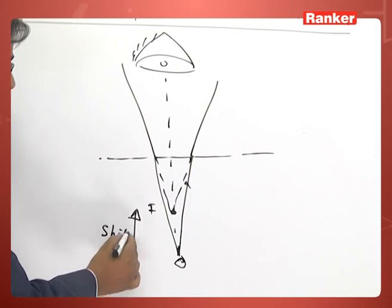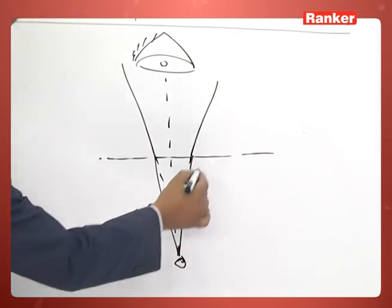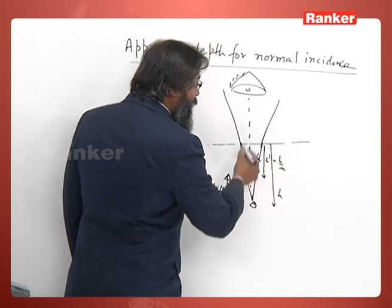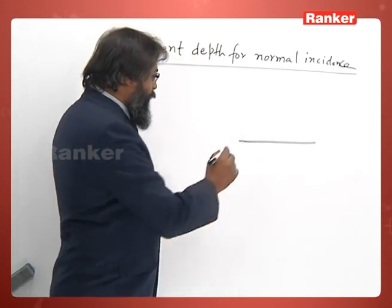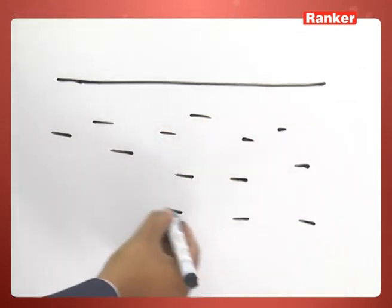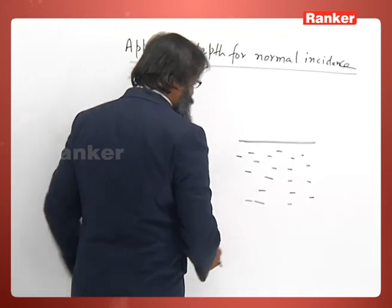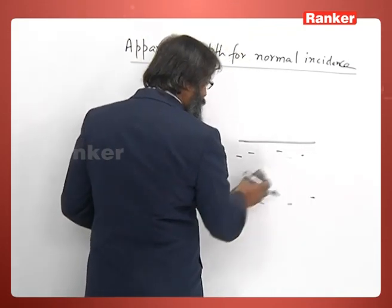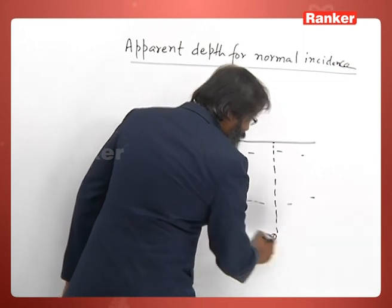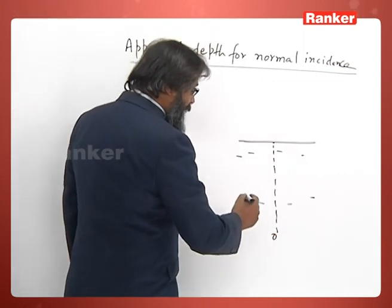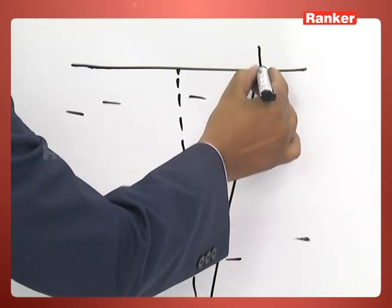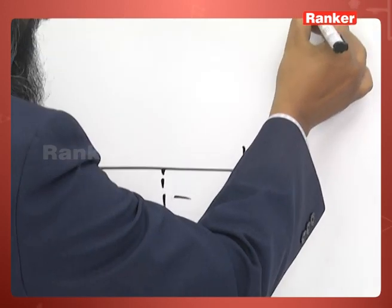Now we are going to calculate how much this shift is and where the new location of the image I is. If the actual depth is h, we will find that h' = h/μ. Suppose this is the surface separating two media — let's say water — and we have an object O at depth h. Let us consider a paraxial ray, which is shown in an exaggerated diagram, bending at the surface.